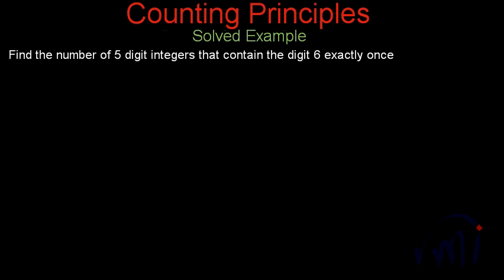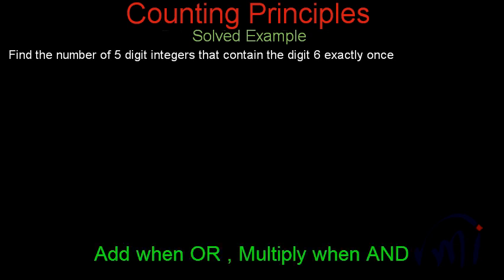Here we have one more solved example — a problem which we are going to solve, and it is also based on the rule of sum and product. We are going to use both the rules. Watch this problem carefully, as it will help you find out where you need to multiply and which are the places where you need to add the possibilities.